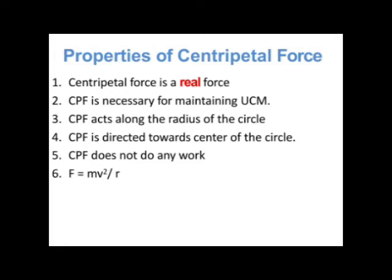Now, what are the properties of centripetal force? Number one, this force is a real force because it is a required force — without it, the body cannot perform circular motion. It is necessary to maintain UCM. It acts along the radius of the circle and is directed towards the center. Centripetal force does not do any work, because it always acts towards the center, and during circular motion the displacement is tangential, making an angle of 90 degrees. Hence work done is zero. To calculate the magnitude of this force, we use the formula F = mv² / r, where m is the mass, v is the speed, and r is the radius of the circular path.